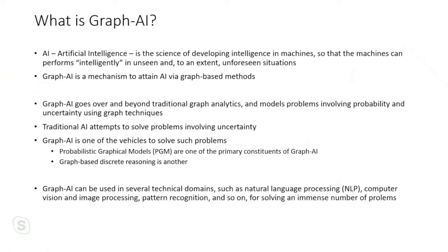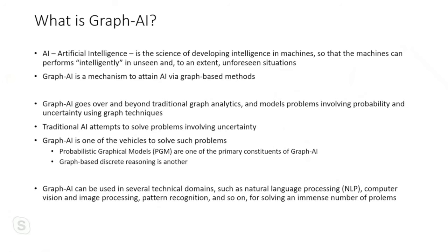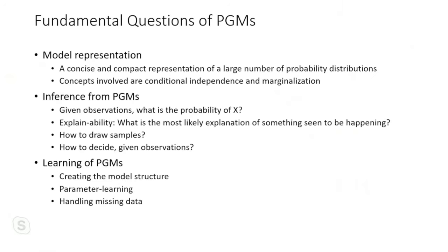Graph AI can be used in many domains: NLP, computer vision, image processing, pattern recognition, and more. A PGM is a graph-based AI model that factors in uncertainty in many forms. Graphs have vertices or nodes and edges connecting pairs. In PGMs, edges can be directed or undirected, and often there will be node-level probability or information-theoretic associations.